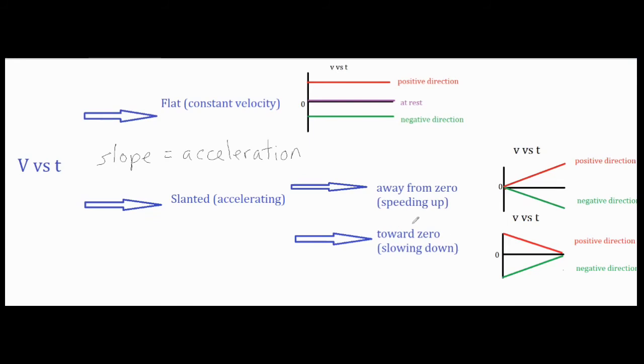On the other end, on the bottom here, you look at the exact opposite. You're looking for a line that's going towards zero. If it's moving towards zero, that means your number is getting progressively smaller as it heads towards zero, therefore it's slowing down.